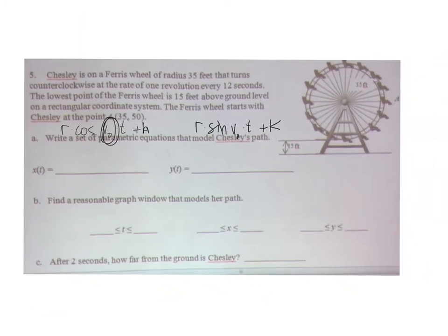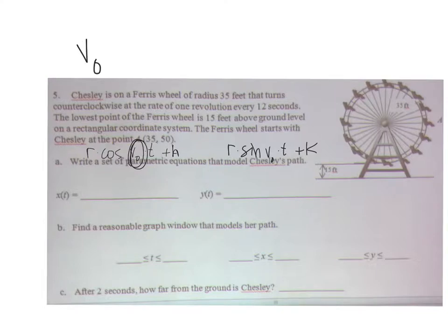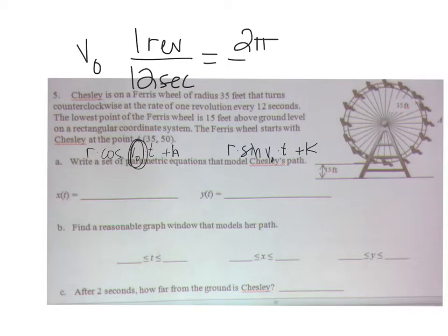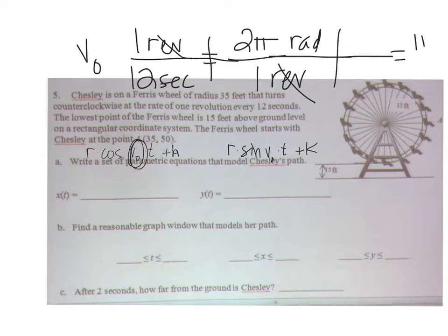So we need to first calculate v naught, which needs to be the angular velocity in radians per second. So I currently have one revolution every 12 seconds. One revolution is equal to 2π radians per one revolution. We'll do some unit conversion - does that give me radians per second? Revolutions cancel out and I get a simplified version of π over 6 radians per second.